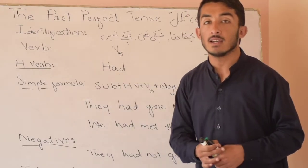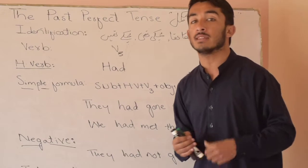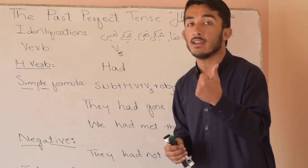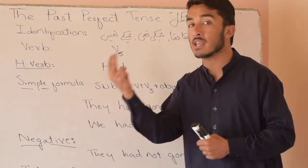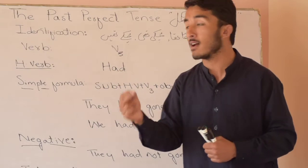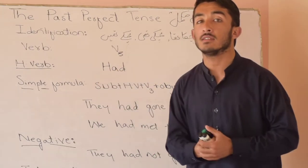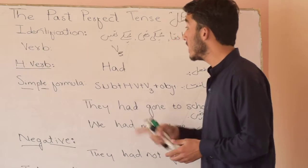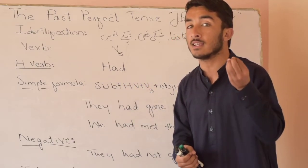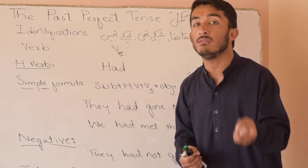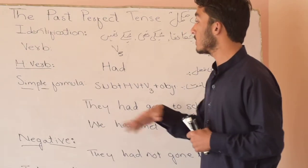The next point is the helping verb. Hamare paas ek hi helping verb hai is tense mein, and that is 'had'. In the present tense we had 'have' and 'has', lekin yahan hamare paas sirf aur sirf ek helping verb hai — that is 'had'. And it is used with all subjective cases, whether that is I, we, you, they, he, she, it, or with all nouns.